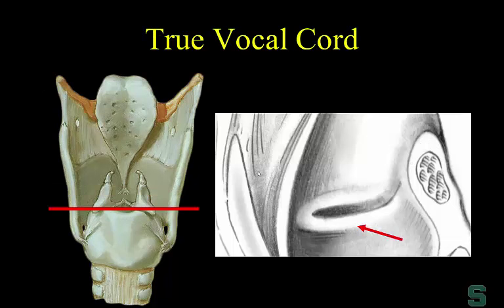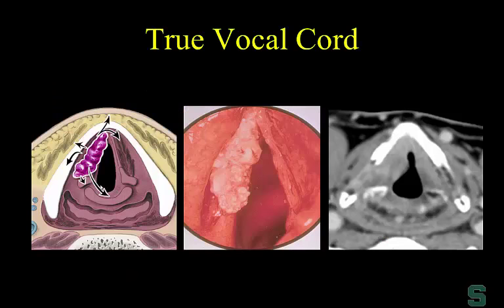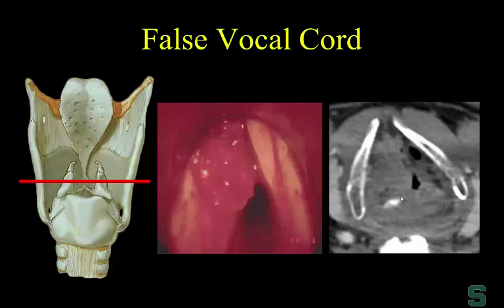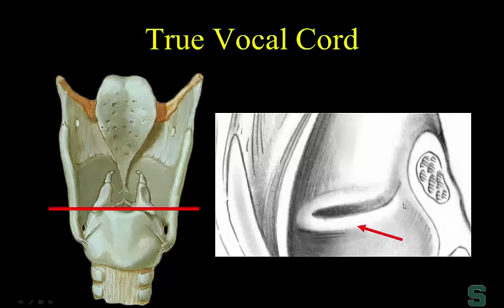Now at the level of the true vocal cord, we can see both the cricoid cartilage and the arytenoid cartilage — we're at the level of the cricoarytenoid joint. A schematic illustrates a small tumor involving the true vocal cord, and another demonstrates a verrucous carcinoma at the true vocal cord level. So: aryepiglottic fold has no cartilage pieces; false vocal cord shows only the top of the arytenoid; true vocal cord shows the cricoarytenoid joint.